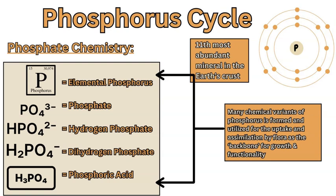Phosphorus comes in different chemical variations within the cycle. It exists as the phosphate ion PO4³⁻, the hydrogen phosphate HPO4²⁻, dihydrogen phosphate H2PO4⁻, and phosphoric acid H3PO4 or H4PO4. These are all variations of phosphorus formed by adding hydrogen and oxygen to the basic element, which occurs when phosphorus reacts with water.